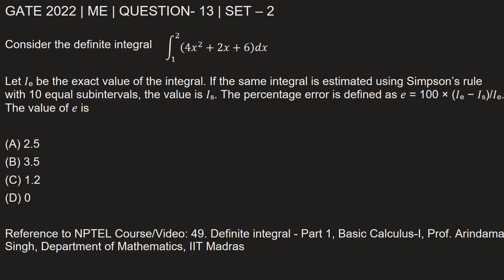This question is from GATE 2022 Mechanical Engineering paper, Set 2, Question 13. Consider the definite integral: integration from 1 to 2 of (4x² + 2x + 6)dx.